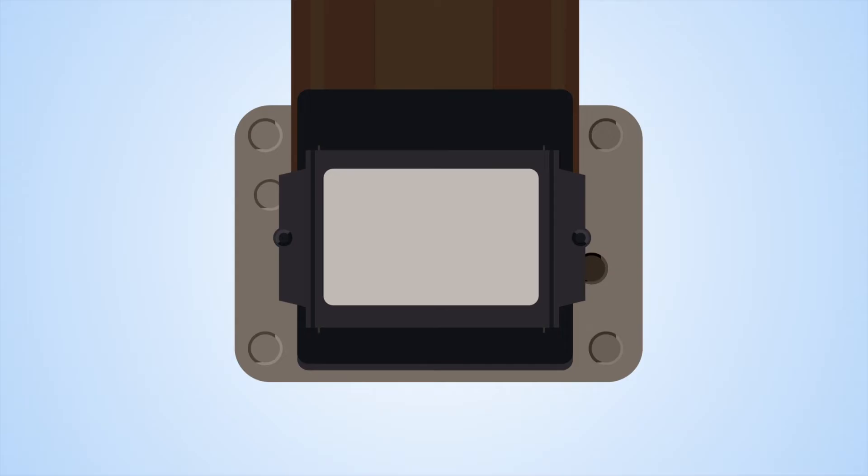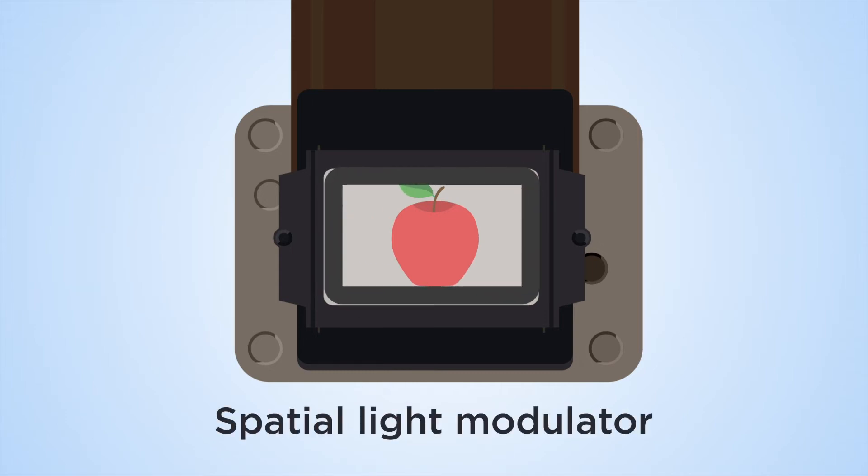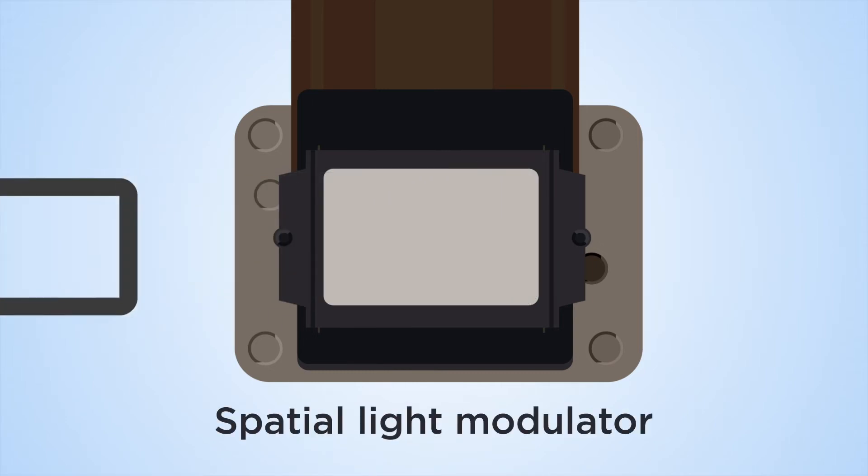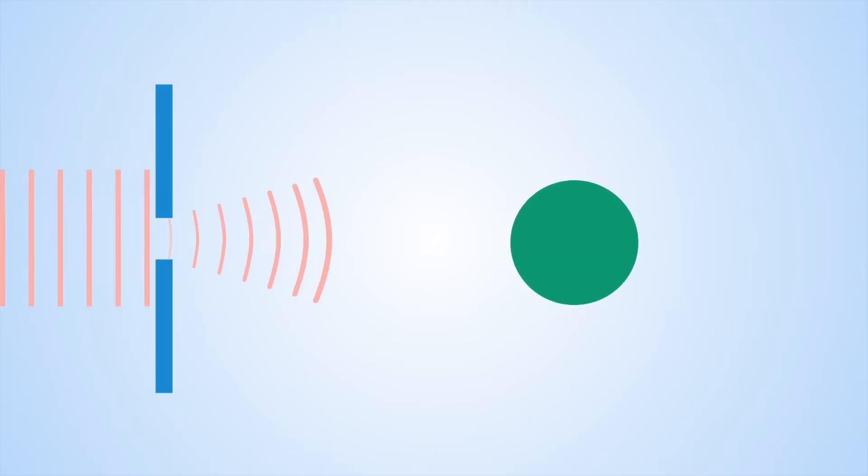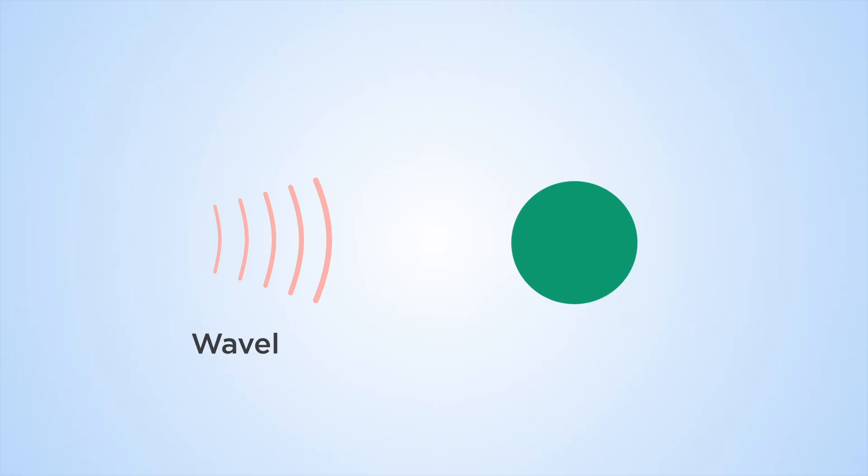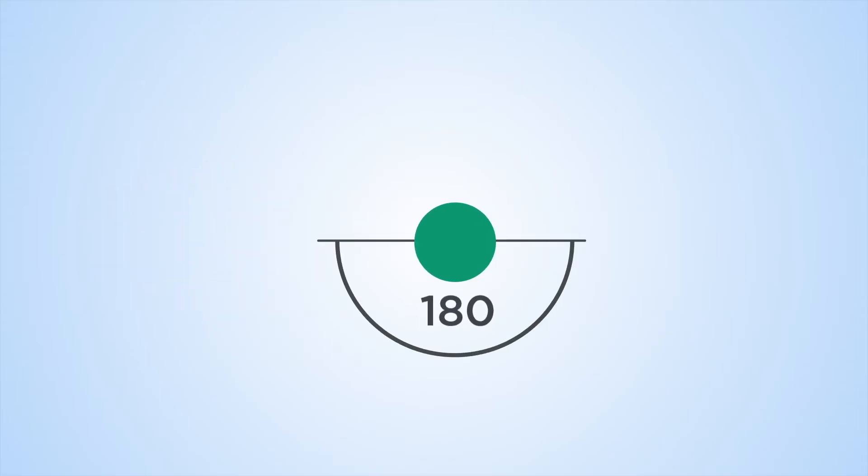The first challenge lies in the current capability of spatial light modulators, or SLMs, devices that can manipulate light and compose the display. The diffraction of light is key for these devices. The supported size of viewing cone, the diffraction angle, is dependent on the wavelength of the light used and the pixel size. Should the pixel size be half the size of the wavelength, 180-degree 3D view becomes feasible.